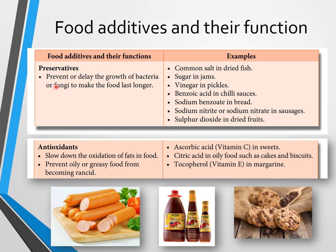The first type is preservatives. Preservatives prevent or delay the growth of bacteria or fungi to make food last longer. Examples include: salt in dried fish, sugar in jams, vinegar in pickles, benzoic acid in chili sauce, sodium benzoate in bread, and sodium nitrite or sodium nitrate in sausages.